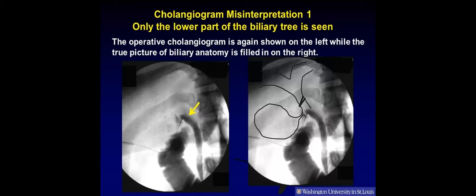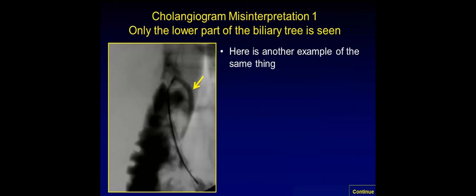The operative cholangiogram is shown on the left while the true picture of biliary anatomy is filled in on the right. Here is another example of the same thing. Only the lower part of the biliary tree is seen. Remember, this almost always means that the common bile duct has been cannulated rather than the cystic duct.